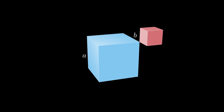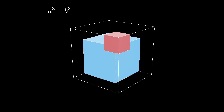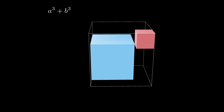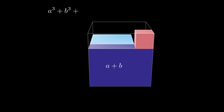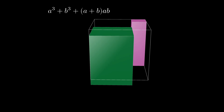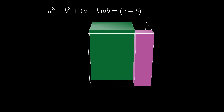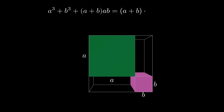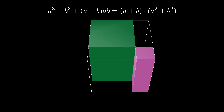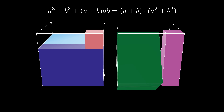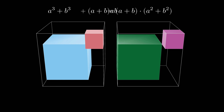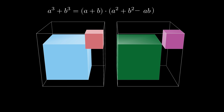We can do something similar with a³ + b³, represented by an a³ cube and a b³ cube placed next to each other. Enclosing them in a larger cube of side length a + b and temporarily filling in the front a by b by (a+b) cuboid adds a volume of (a+b)·a·b. Decomposing this filled shape into two rectangular prisms, each with one dimension a + b, gives volume (a+b)(a² + b²). Subtracting (a+b)·ab from both sides and factoring out (a+b) yields a³ + b³ = (a + b)(a² + b² − ab).